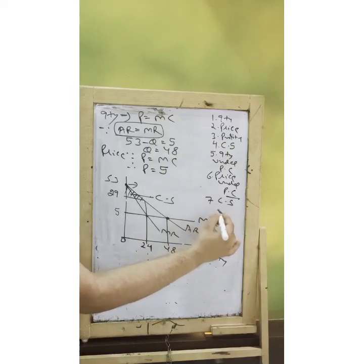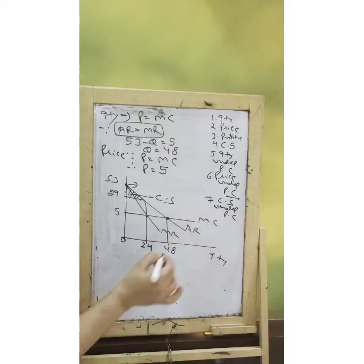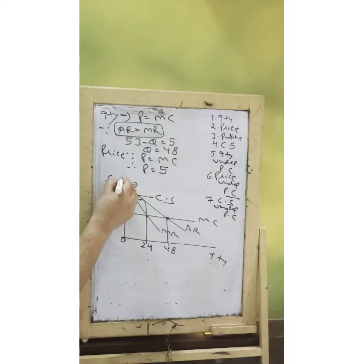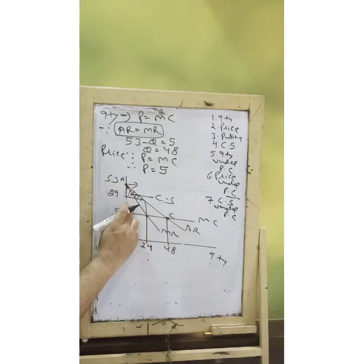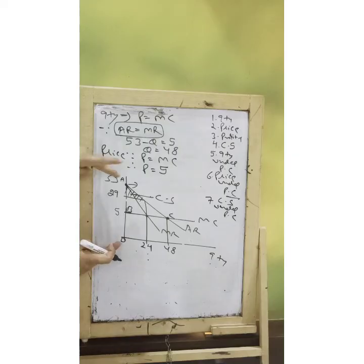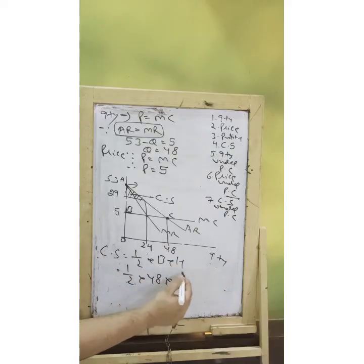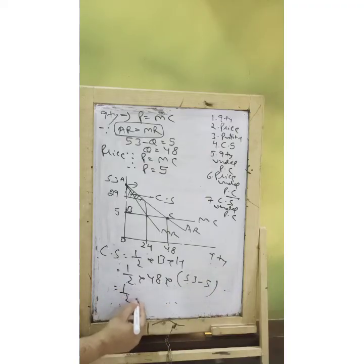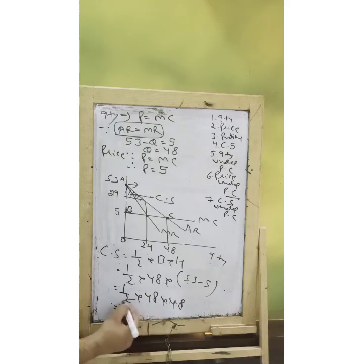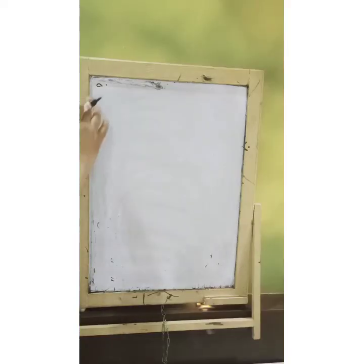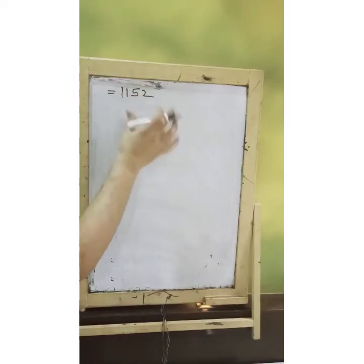Suppose you were to solve consumer surplus under perfect competition. Consumer surplus under perfect competition shall be the whole big triangle — area A, P, and C. It is the difference between the maximum price of 53 minus the actual price the guy pays. Using half into base into height: half into 48 into (53 minus 5) equals half into 48 into 48. The value is 1,152. So far we have solved seven things.